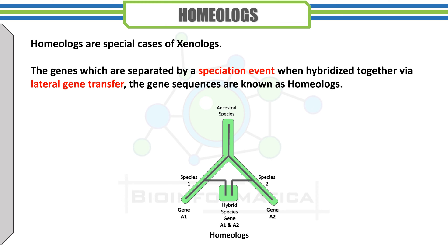Homeologues arise from the hybridization of genes from two separate species. These are a special class of xenologues where genes separated by a speciation event, when hybridized together via lateral gene transfer, are known as homeologues. In this example, an ancestral species divides into species 1 and species 2, with gene A1 and gene A2 respectively. A hybrid species is then formed by lateral gene transfer from both species, containing both gene A1 and A2 — this hybrid combination is known as homeologues.